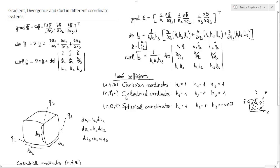Every physicist and every engineer might be forced to investigate a more complicated coordinate system, for example a conical coordinate system or an elliptical coordinate system. How do we calculate these Lamé coefficients then if we actually don't know how to draw these kinds of things? It's really handy to have some tools without repeating all that drawing stuff.